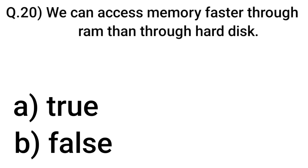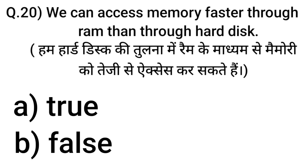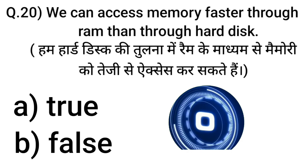Question 20: We can access memory faster through RAM than through hard disk. In Hindi: Hum hard disk ki tulna mein RAM ke madhyam se memory ko tezi se access kar sakte hain. Right answer option is A — True. Thanks for watching the video.